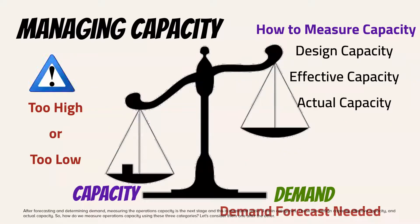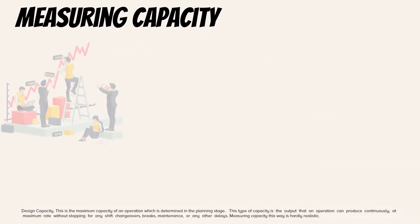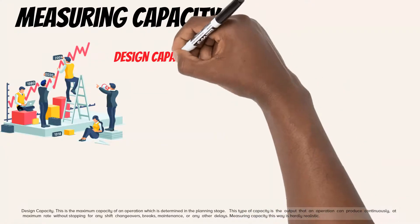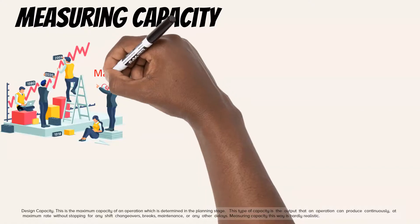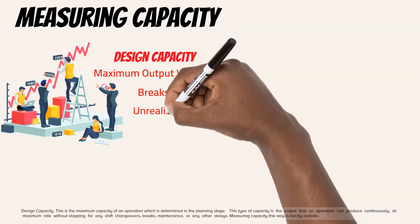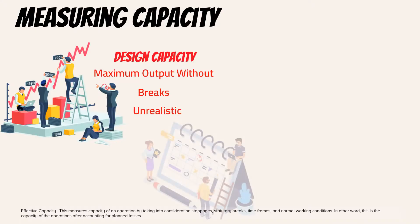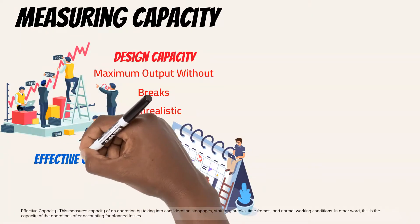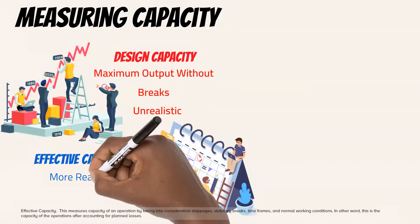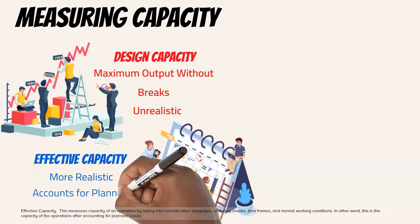Let's consider them one after the other. Design capacity is the maximum capacity of an operation which is determined in the planning stage. This is the output that an operation can produce continuously at maximum rate without stopping for any shift changeovers, breaks, maintenance, or any other delays. Measuring capacity this way is hardly realistic. Effective capacity measures capacity by taking into consideration stoppages, statutory breaks, time frames, and normal working conditions. In other words, this is the capacity of the operations after accounting for planned losses.